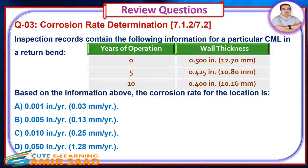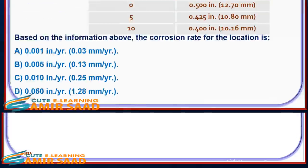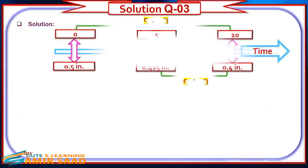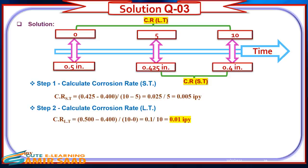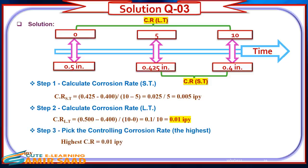Question 3: Inspection records contain the following information for a particular CML in a return bend. Based on the information, what is the corrosion rate for the location? Solution: Step 2: Calculate the short-term corrosion rate. Step 3: Calculate the long-term corrosion rate. Step 4: Pick the controlling corrosion rate — the highest. The answer is C: 0.010 inch per year.